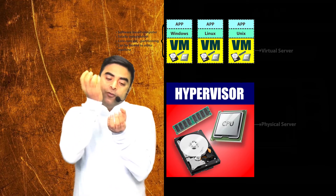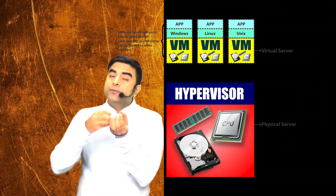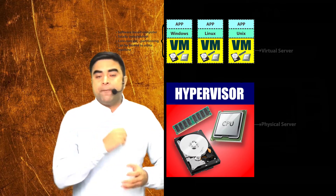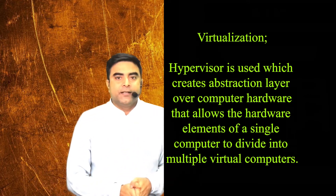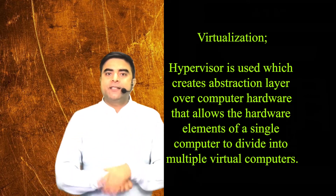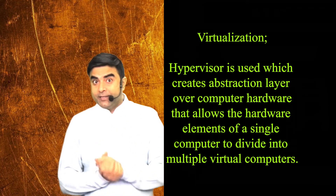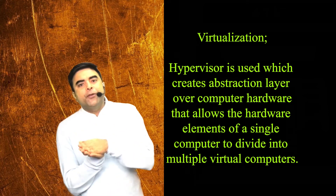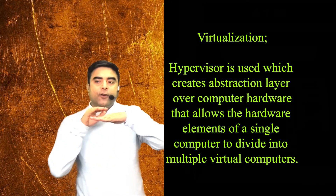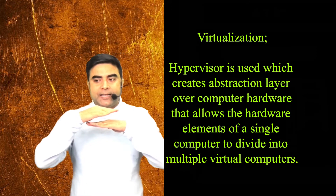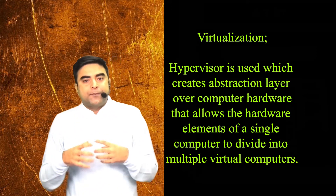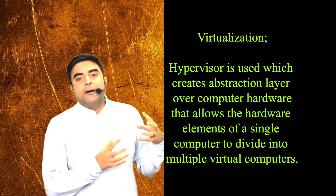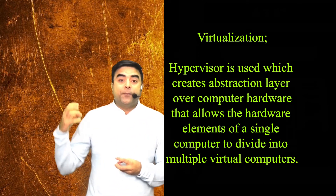So from one physical machine with its hardware, we can create multiple virtual machines — popularly called VMs. In virtualization, a software named hypervisor is used, which creates an abstraction layer over the computer hardware. This abstraction layer allows hardware elements of a single computer — like processor, memory, and storage — to be divided into multiple virtual computers.